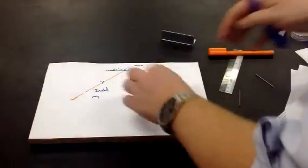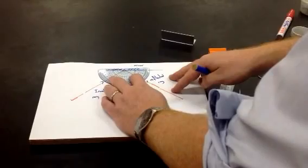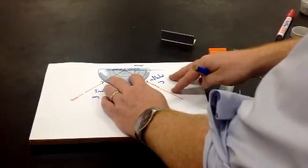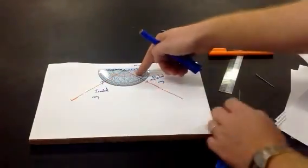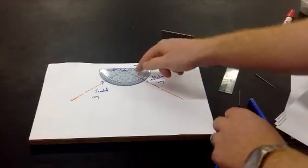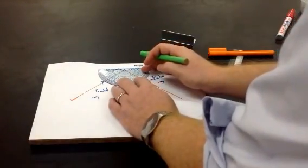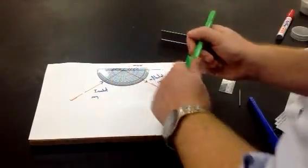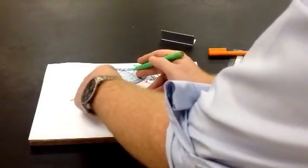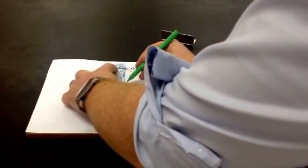To find the normal, we're going to put a protractor against our mirror, and remember that the normal is always at 90 degrees to the mirror. So, line it up carefully. There's 90 degrees. So that would be my normal.